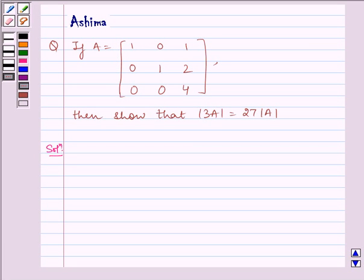Hello and welcome to the session. Let us understand the following problem today. If A equals 1, 0, 1, 0, 1, 2, 0, 0, 4, then show that the determinant of 3A is equal to 27 times the determinant of A.